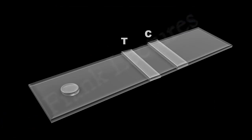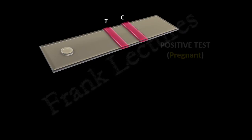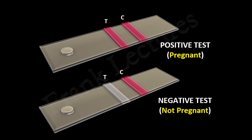A typical home pregnancy strip looks like this. The designation T represents the test zone, and the designation C represents the control zone. A urine sample is added to this strip, and after a few minutes, either of two types of results can be seen. If both T and C lines become colored, the test is positive. If only the C line becomes colored, the test is negative.